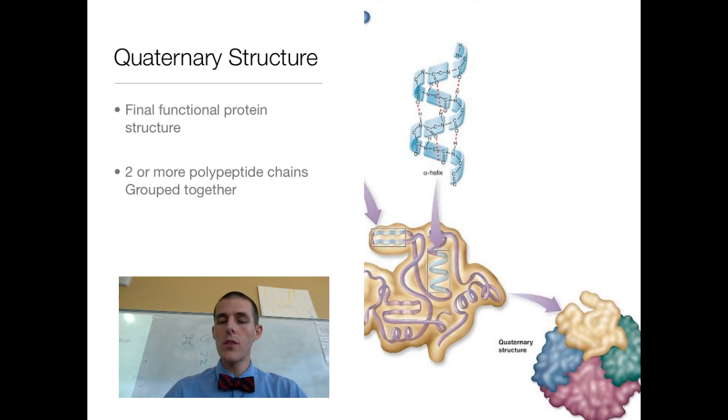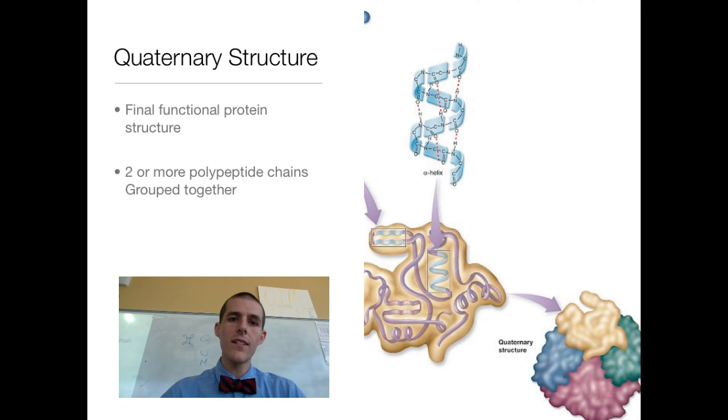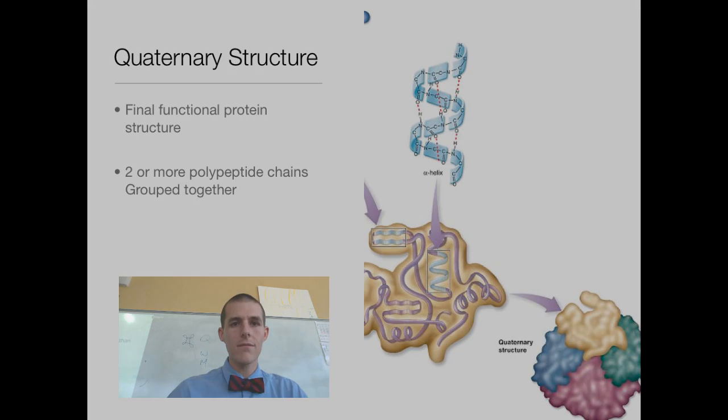So that is your quick run through proteins. Primary structure is the sequence of amino acids — the letters in the alphabet. Secondary structure is those amino acids interacting through hydrogen bonding to form alpha helixes and beta pleated sheets. Tertiary structure is where those sheets and helixes fold and interact with strong bonding. And quaternary structure is taking that folded polypeptide chain and putting it together with others into a functioning protein. Hope it was helpful — look forward to seeing you next time on the Lab 207 webcast.